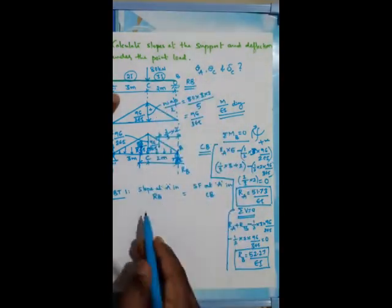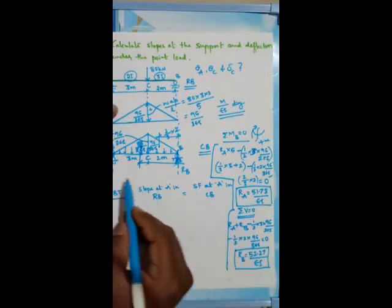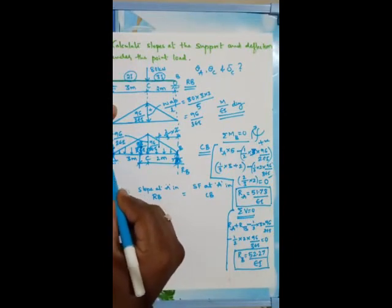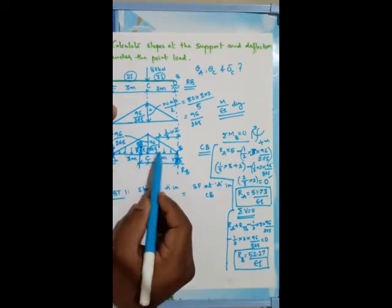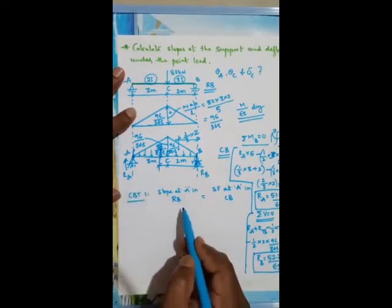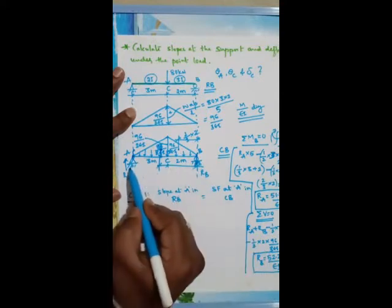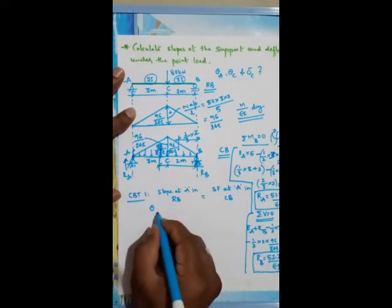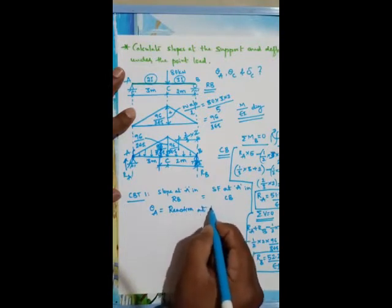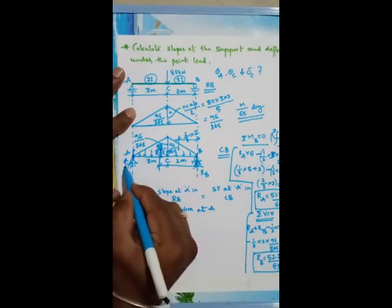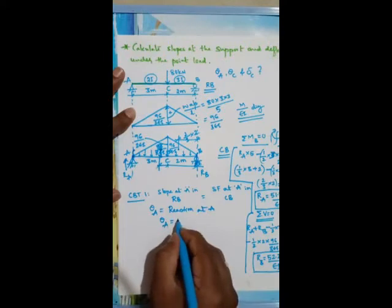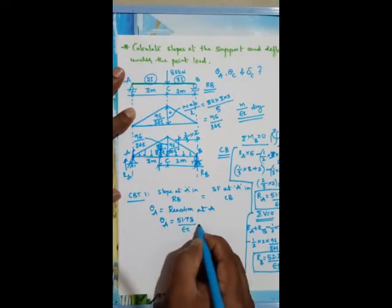Similarly, theta B (slope at B in real beam) equals shear force at B in conjugate beam, which is directly the reaction Rb. Always remember: in a simply supported beam, slope at support A equals reaction at A, and slope at support B equals reaction at B. Considering the sign convention (cut section rightwards, upwards is negative), theta B = 52.27/EI radians.